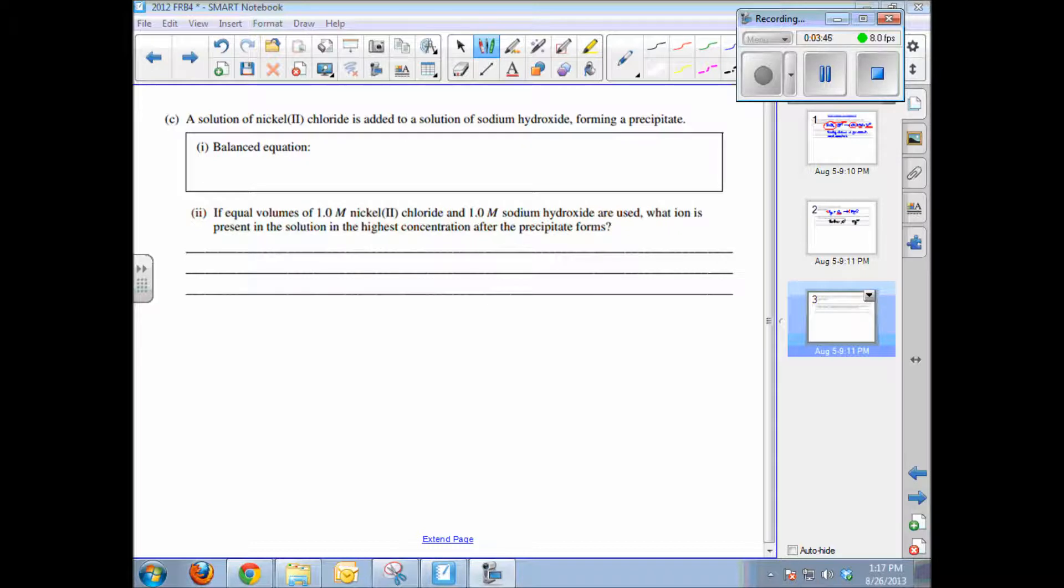The balanced chemical equation: again, chloride is going to be a spectator ion, so we just show the ions that react. Nickel 2 plus plus 2 OH minus produces nickel(II) hydroxide.